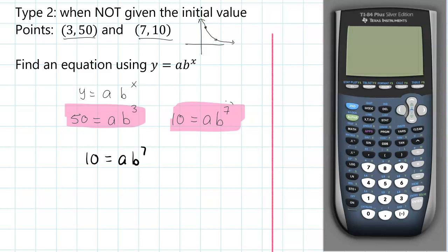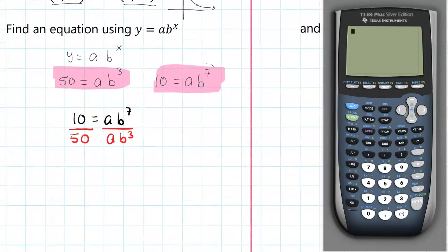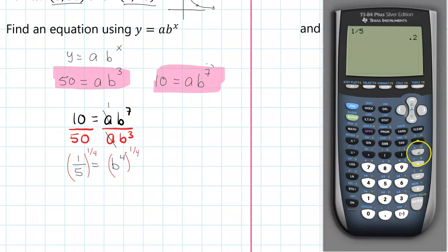The most efficient way to solve this is to take the two equations and divide one by the other. I take the one with the highest exponent: 10 equals a times b to the 7, divided by the other equation a times b to the 3, which must equal 10 over 50. The a's reduce out, and b to the 7 over b to the 3 is b to the fourth, leaving 1/5 equals b to the fourth. To find b we take the fourth root: 0.2 raised to the 1/4 power gives approximately 0.669.